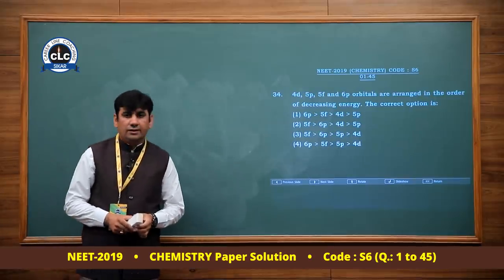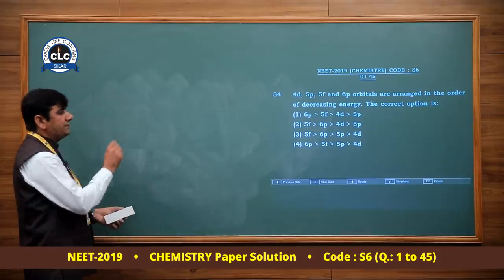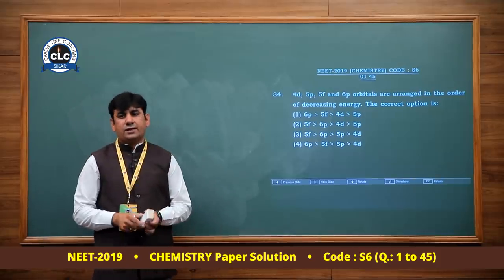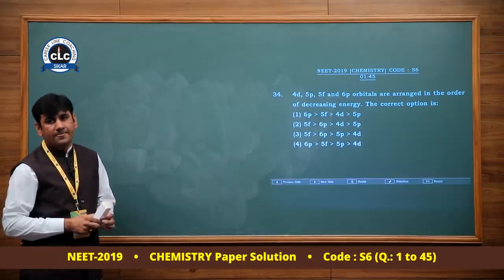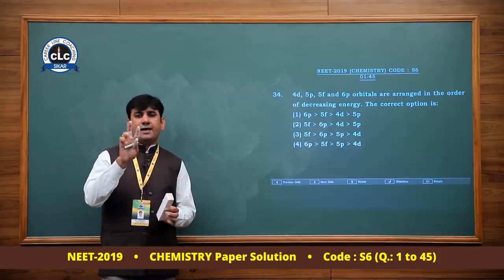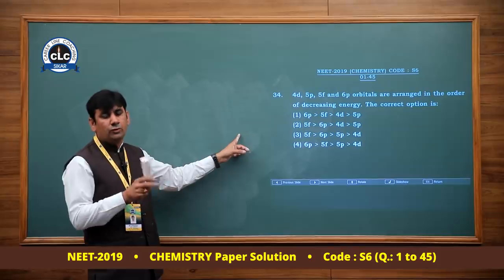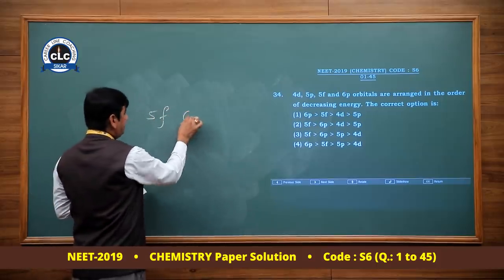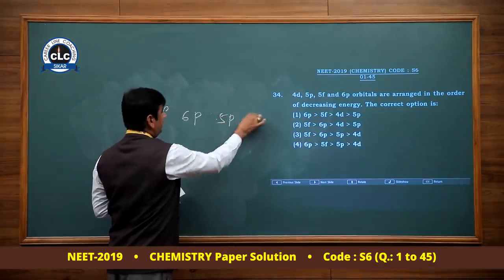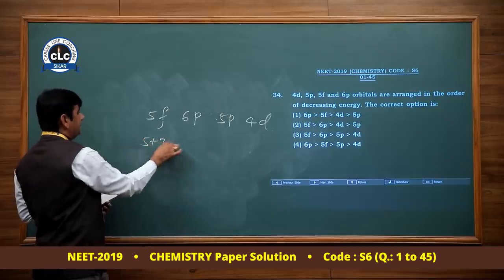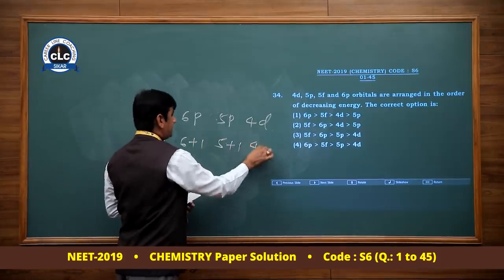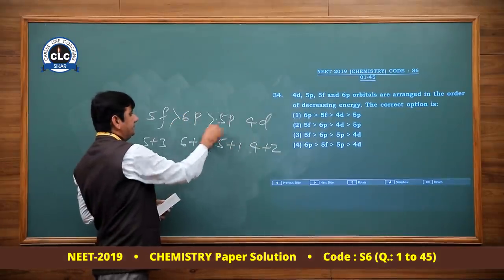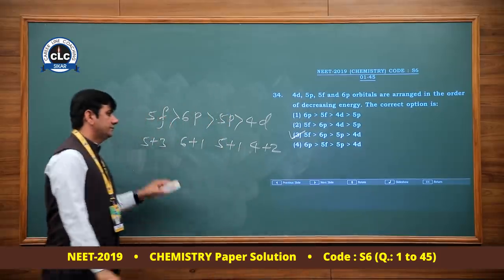Increasing order of energy using n+l rule. The increasing order of n+l gives the increasing order of energy. For 5f: n+l = 5+3 = 8; for 6p: 6+1 = 7; for 5p: 5+1 = 6; for 4d: 4+2 = 6. When n+l values are equal, lower n means lower energy.